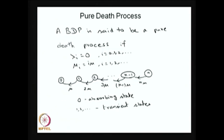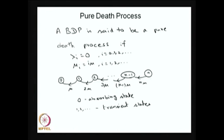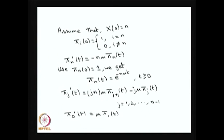Suppose the system is in state n at time 0. With that assumption, the equation for state n is: pi_n-dash(t) = minus n*mu * pi_n(t). The rate at which the system leaves state n to state n−1 is n*mu. Therefore the equation for state n has only the outgoing rate term: pi_n-dash(t) = −n*mu * pi_n(t). Using the initial condition pi_n(0) = 1, I will get pi_n(t) = e^(−n*mu*t).